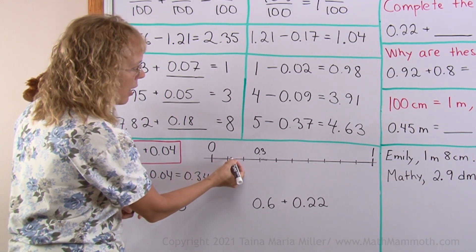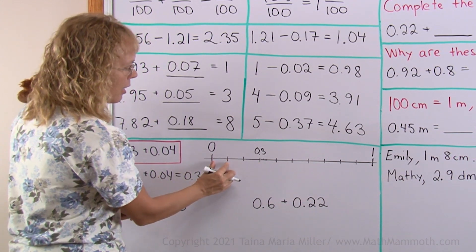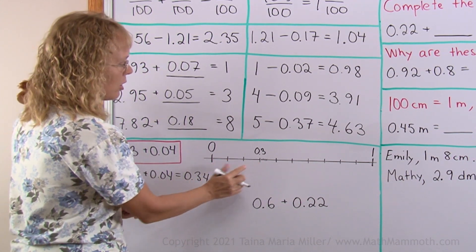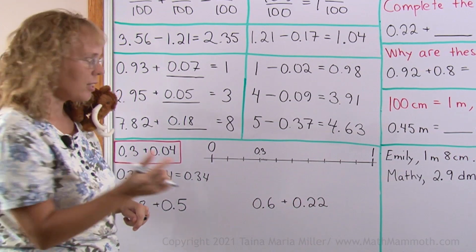If I put here these little marks for hundredths, then I would have 10, 10, and 10 here. So 3 tenths would be 30 hundredths.